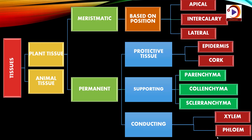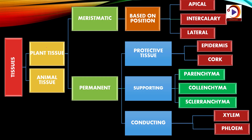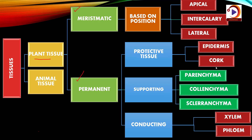Let us talk about the tissues in more detail. We have various types of tissues shown in diagrammatic form. Tissues can be broadly divided into two types: animal tissue and plant tissue. In this video we will be discussing plant tissues. Plant tissue can be further categorized into meristematic and permanent tissue. Let us first talk about meristematic tissue.